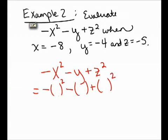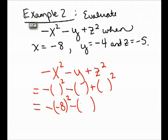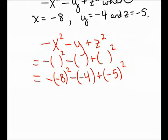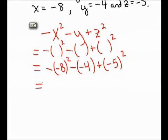In the first set of parentheses, I need to put the value of x, which is negative 8. In the second set of parentheses, I need to put the value of y, which is negative 4. And in the third set of parentheses, I need to put the value of z, which is negative 5. Now I need to calculate the answer.